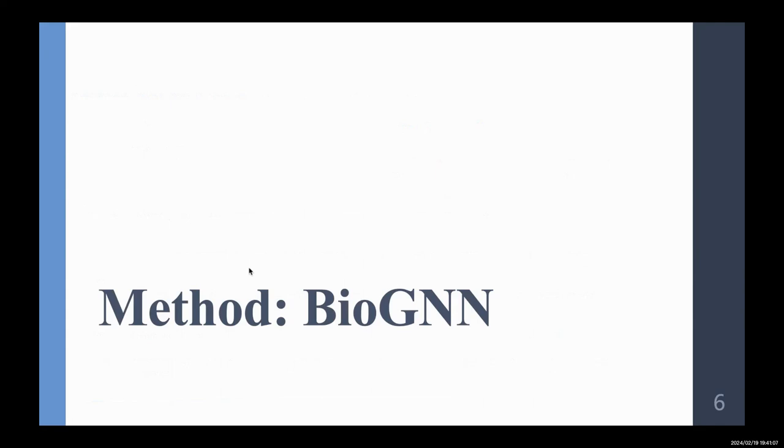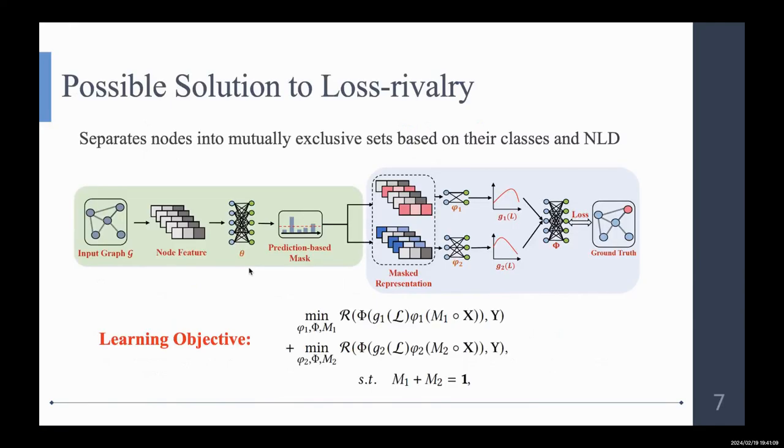And here's our method, BioGNN. The most straightforward solution to loss rivalry is to separate nodes into mutually exclusive sets based on their classes and NLD. So the learning objective here is that given the input graph and the node feature,